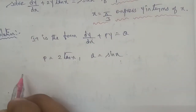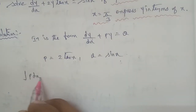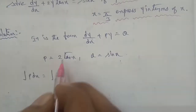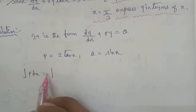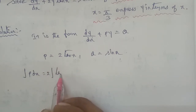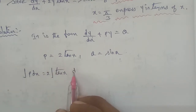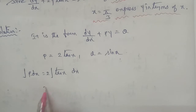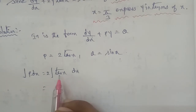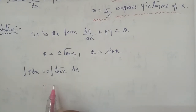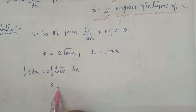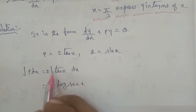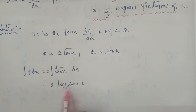Integral P dx is equal to integral of 2 tan x dx. That is 2 into integral tan x dx. The formula for integration of tan x is log sec x, so integral P dx equals 2 log sec x.